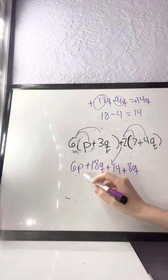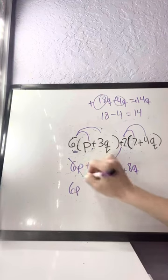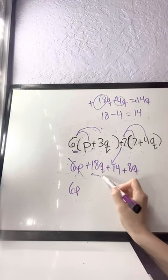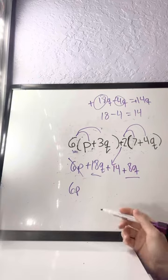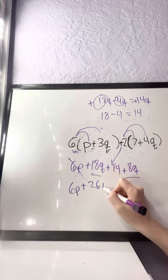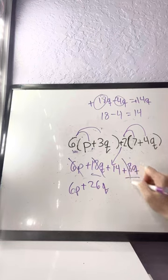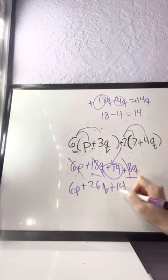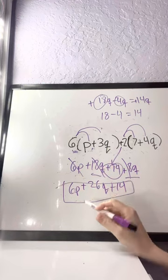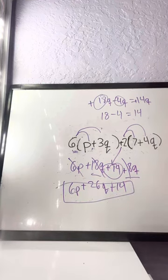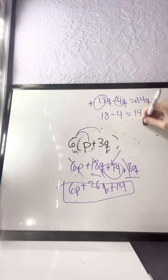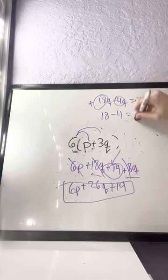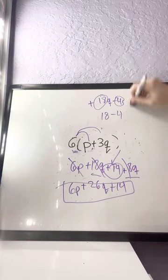So, 6, P has no same last name. We're just going to bring it down. Cross it out. 18, Q has the same last name as 8, Q. 18 plus 8 is 26. So, we're going to have plus 26, Q. And cross those out. And last thing we have is the positive 14. So, here's our answer. 6, P plus 26, Q plus 14. So, let's try another problem. I just did that so you could see all the different ways. So, if you're confused, that should have helped.